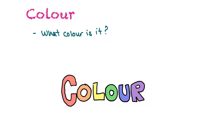One thing we use to describe matter is color — what color is the substance? Being as specific as possible is always more helpful because then we have a better understanding of the differences between different colors.